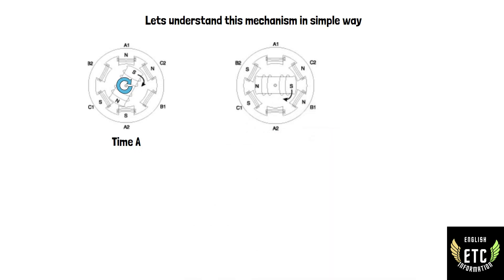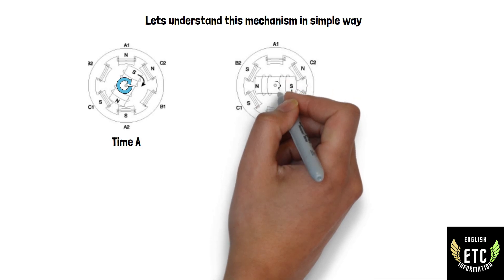At time B, the polarity of the stator poles is reversed so that now C2 and B1 are north poles and C1 and B2 are south poles. The rotor is forced to rotate 60 degrees to line up with the stator poles as shown.